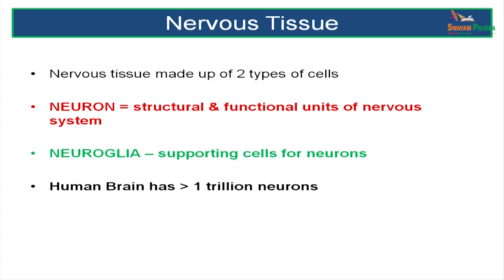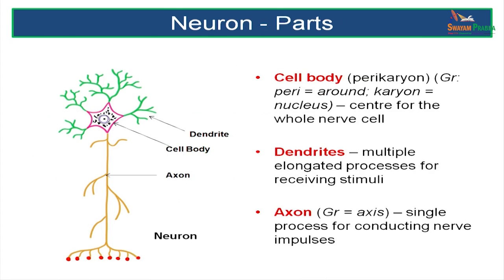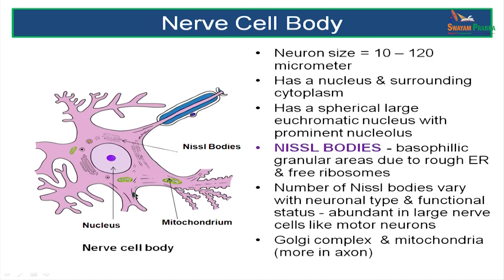The human brain has more than one trillion neurons. The neuron is made up of a cell body. The cell body has short branching processes like a tree which are called the dendrites. There is a long slender process called the axon and the axon ends in terminal boutons. If you look at the close-up of the nerve cell body, it has a nucleus in the center with dendrites, mitochondria, endoplasmic reticulum and a Golgi apparatus.